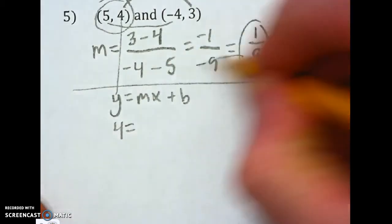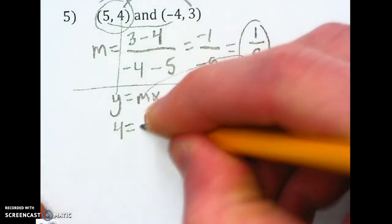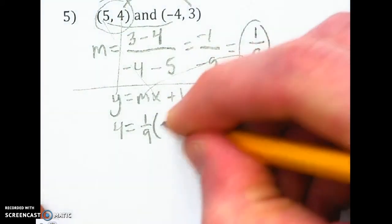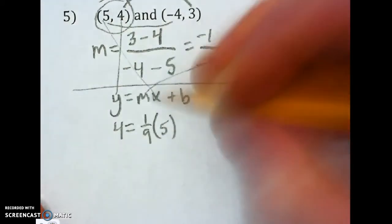equals my m value, which is 1 ninth, times my x value, which is 5, plus b.